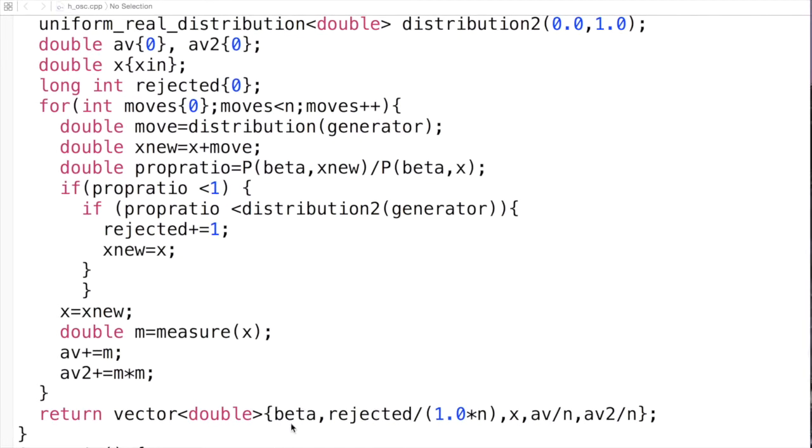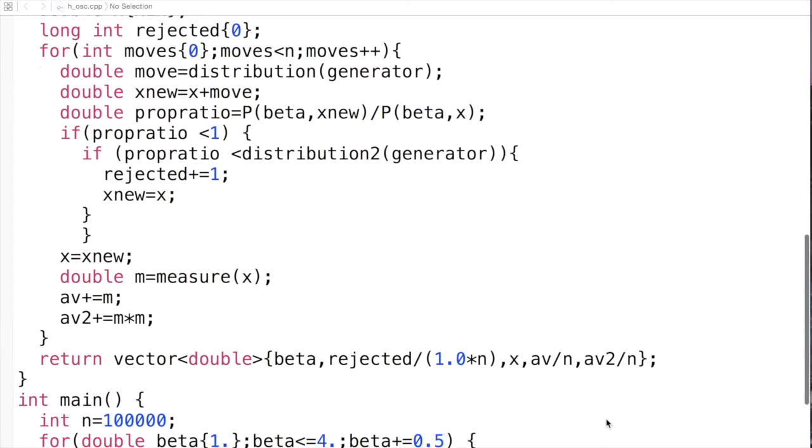And at the end we return, as all of these codes do, the value of beta, the fraction of rejected moves, the point of x red, the average measurement, and the average measurement squared. And those two make sense.